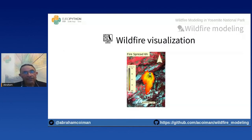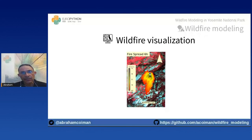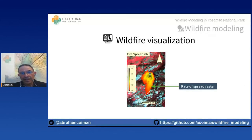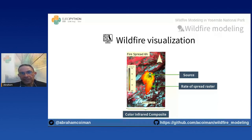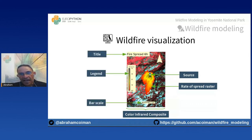Having executed the r.ros and r.spread modules, we visualize results using various GRASS GIS commands to create three or four frames. Each frame contains the rate-of-spread raster for each iteration, a vector indicating the simulation source, a color infrared composite of the Landsat image, and the corresponding title, legend, scale, and north arrow.